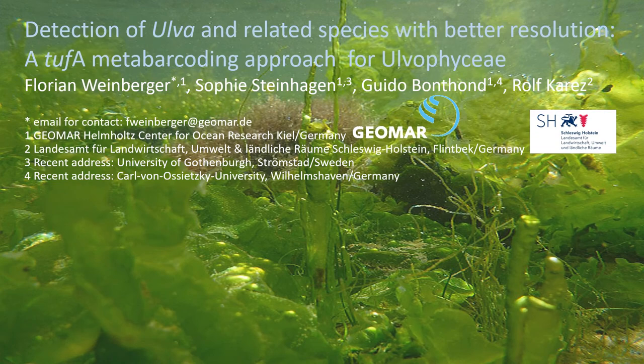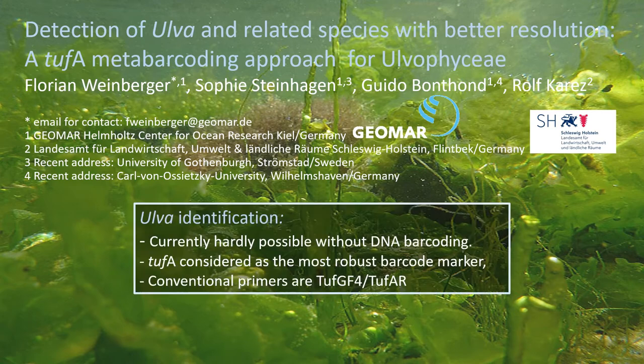The identification of Ulva and related seaweeds is often very challenging, because multiple species with overlapping morphologies frequently co-occur. For this reason, DNA barcoding is in most cases indispensable for a reliable identification. The particularly suitable marker gene for the identification of Ulva and related taxa is tufA, which is usually amplified with the primer pair tufA-GF/tufA-AR.